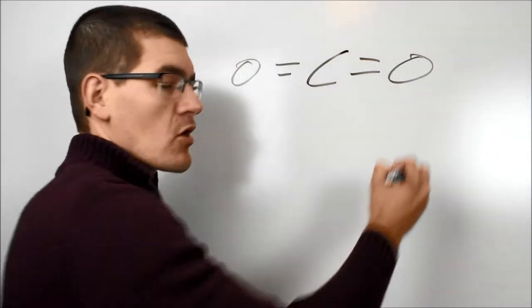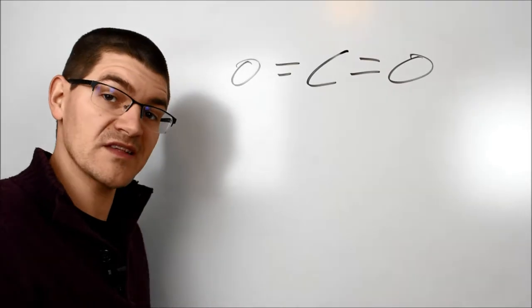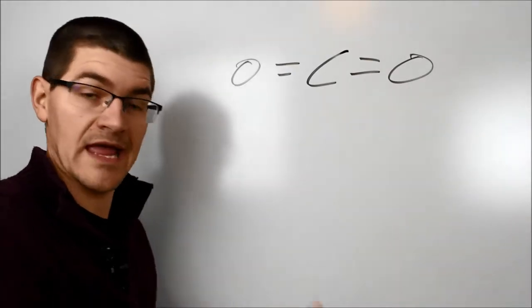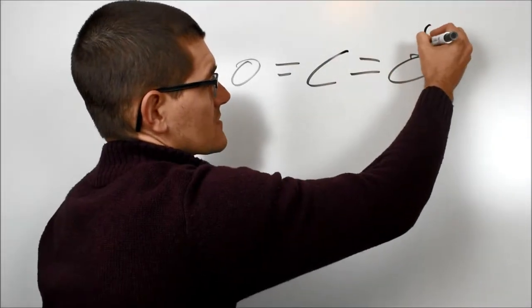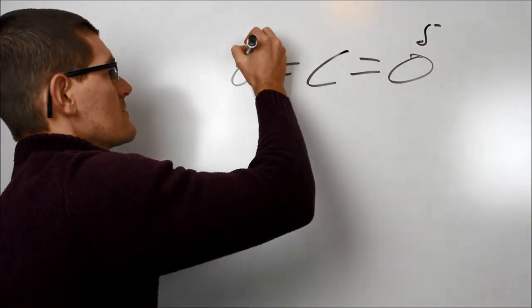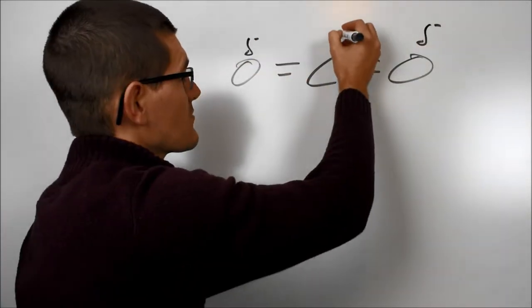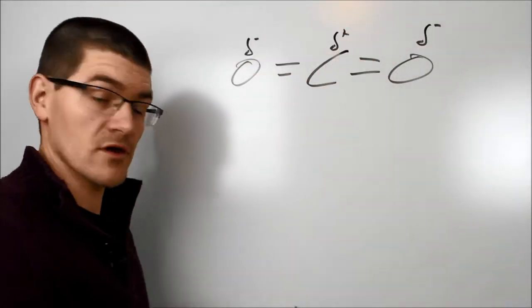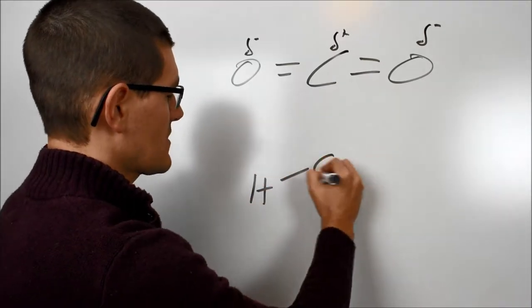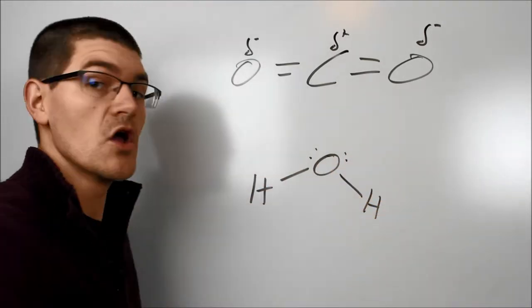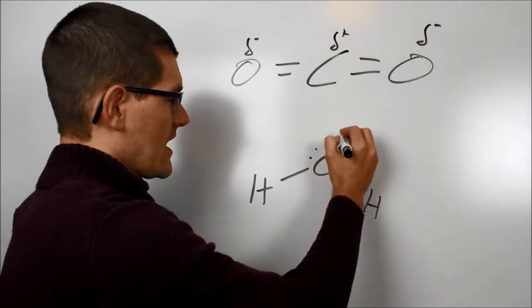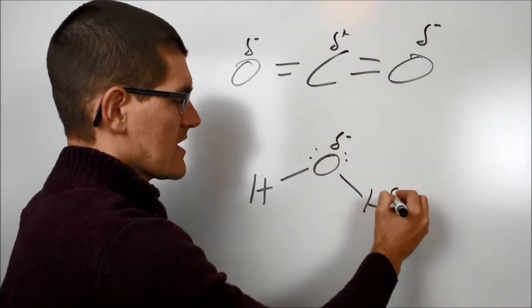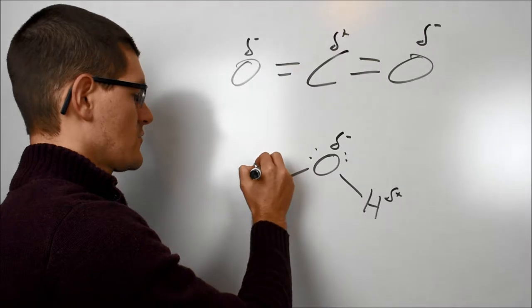If you look at carbon dioxide, we have partial negatives and partial positives based on the electronegativities of the carbon and the oxygen. The oxygen wants those electrons more, so each of them get partial negatives while the carbon gets a partial positive. If we then look at the water, we can see sort of the same thing. That oxygen, especially because it has those two lone pairs, really wants the electrons more than the hydrogens do, so it gets a partial negative while the hydrogens get a partial positive.